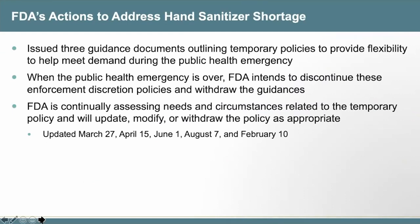In order to address the demand for hand sanitizer, FDA issued three guidance documents outlining temporary policies to provide flexibility to help meet demand. When the public health emergency is over, FDA intends to discontinue these enforcement discretion policies and withdraw the guidances. We have updated these temporary guidances five times so far, most recently on February 10, to note that the policy does not apply to products for which FDA has identified a safety concern, including those subject to an FDA import alert. We will discuss the FDA countrywide import alert placed on alcohol-based hand sanitizers from Mexico later in this presentation.